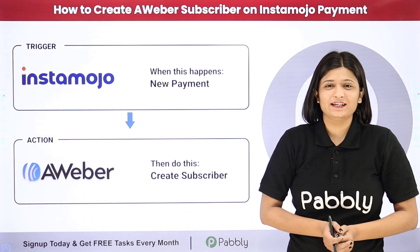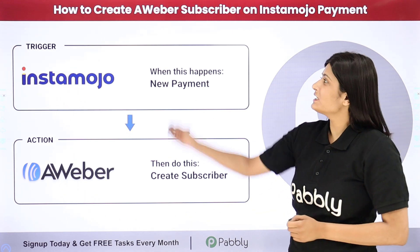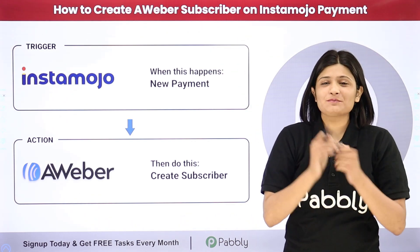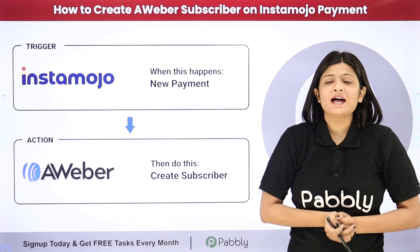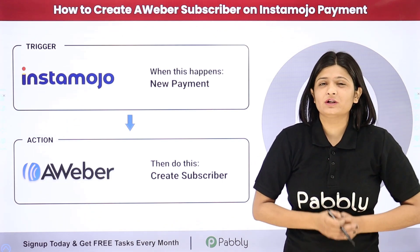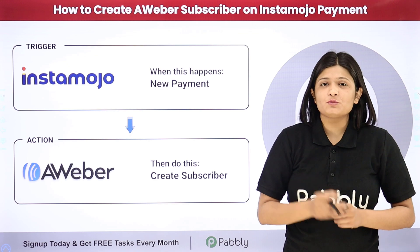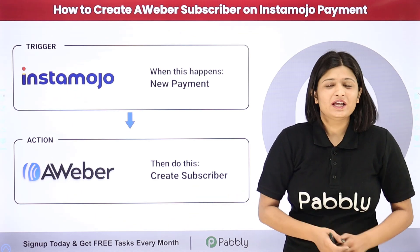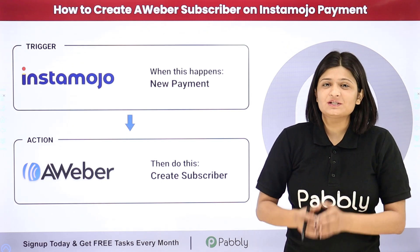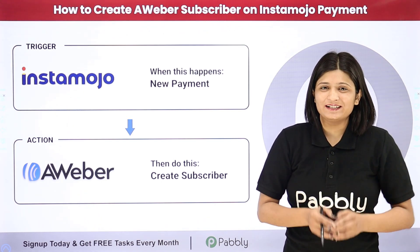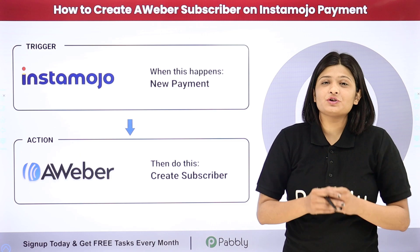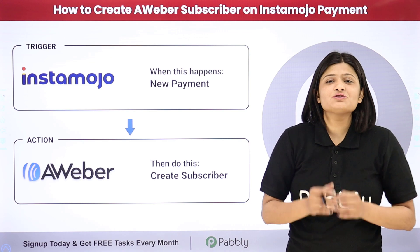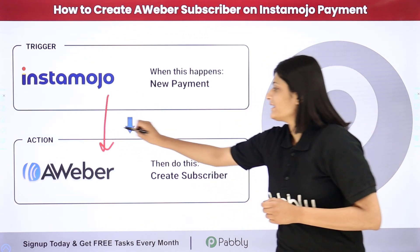Hello everyone, welcome back to Pabbly. In this video, we are going to learn how to create an Aweber subscriber on an InstaMojo payment. So let's suppose I am running an online business and I rely on InstaMojo for all my payments. Whenever there is a new payment in InstaMojo, I want to create a subscriber in Aweber automatically. To completely automate this process, I am going to use Pabbly Connect — an amazing automation and integration software which requires no coding or programming skills. I just need to build a connection between InstaMojo and Aweber.